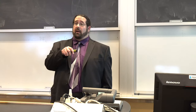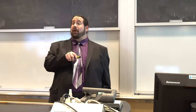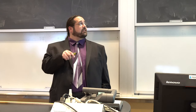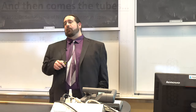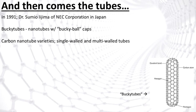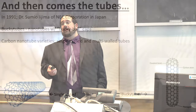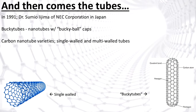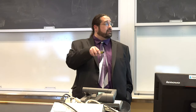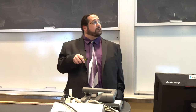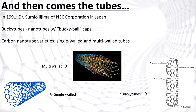It would be Kroto, Smalley, and Curl who got the Nobel Prize in 1996 in chemistry for the discovery of the Bucky balls. Six years later, Dr. Sumio Iijima working at the NEC Corporation, modifying the Bucky ball procedure, discovered a Bucky tube — basically a carbon nanotube with two caps, one at each end of a half Bucky ball — leading to the discovery of single-walled and multi-walled carbon nanotubes with nested layers anywhere from two to 25 layers deep.